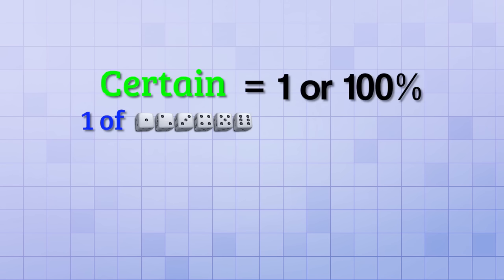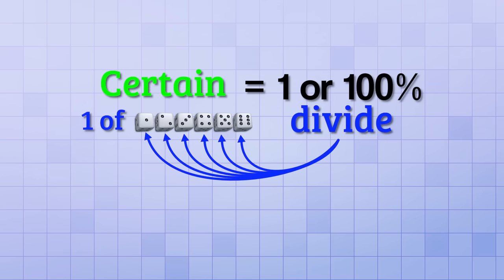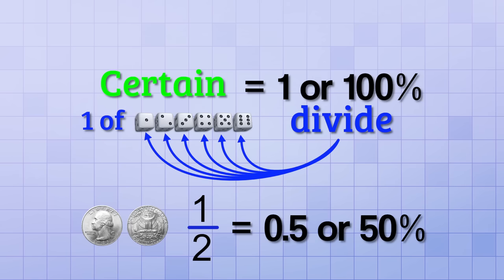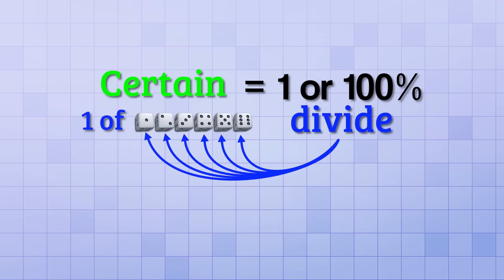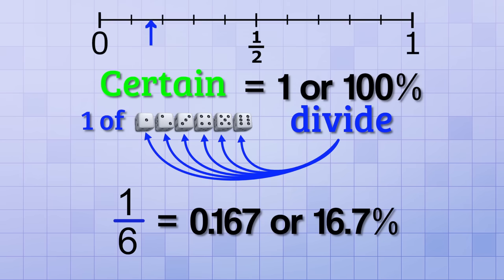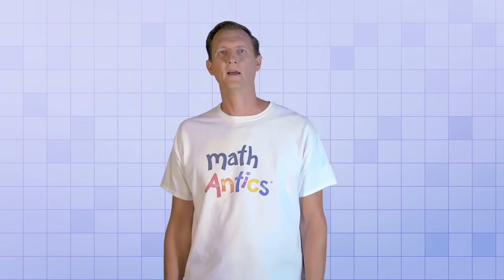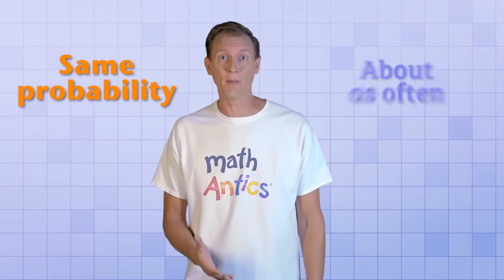One way to think about it is that it's certain that one of those 6 sides will land facing upwards, which is a probability of 1 or 100%. But since only one side can face upwards for a given roll, we have to divide up that value among all the possibilities. In the case of a coin toss, since there were only 2 possibilities, we had to divide the probability by 2. 1 divided by 2 is 1 half, which is the decimal 0.5 or 50%. But with the die, we need to divide the probability up evenly between 6 possibilities. 1 divided by 6 is 1 sixth, which is equivalent to 0.167 or 16.7%. So that would be right here on our probability line. That means it isn't likely that I would roll a 3, for instance, but it's just as likely as rolling any other number. And since all 6 numbers have the same probability, each number should come up about as often as the others.